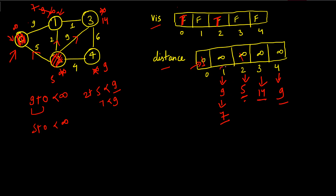Among remaining unvisited vertices, vertex one has the minimum distance of seven. We explore its neighbors — two of them are already visited. For the remaining neighbor, distance[1] is seven and the edge weight is one, so seven plus one equals eight, which is less than fourteen. We update that neighbor's distance to eight. All neighbors of vertex one have been explored, so we mark vertex one as visited.